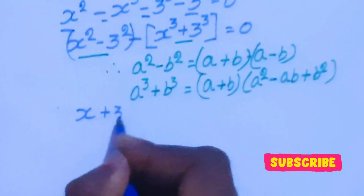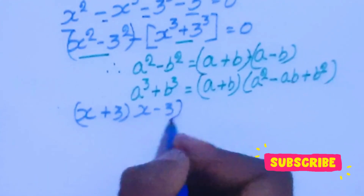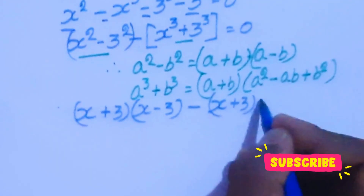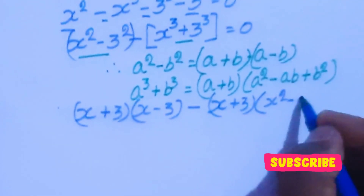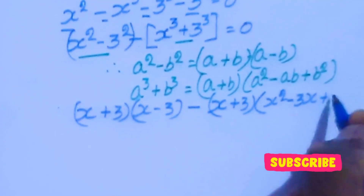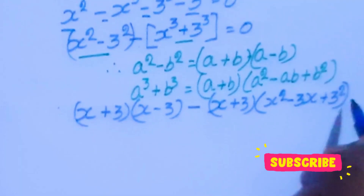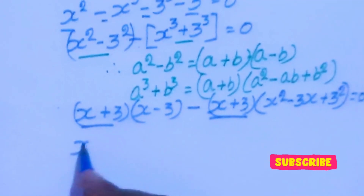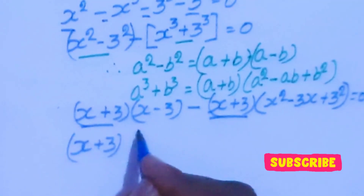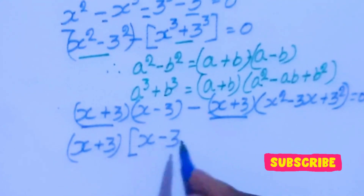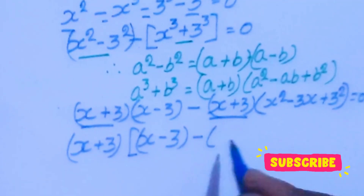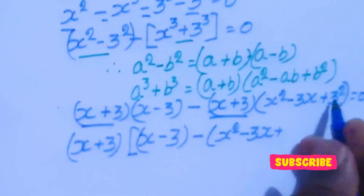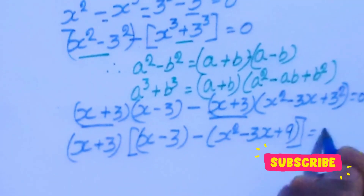So (x plus 3)(x minus 3) minus (x plus 3) times (x squared minus 3x plus 3 squared) equal to 0.